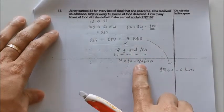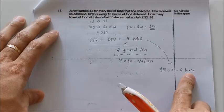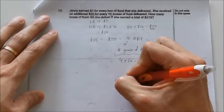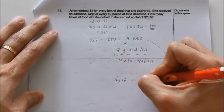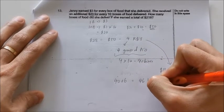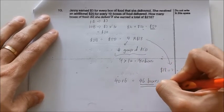So all together from here I get 40 boxes, and here I have 6 boxes. So all together it will be 40 plus 6, which gives me 46 boxes. That's the answer.